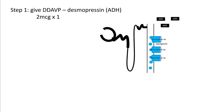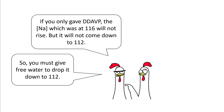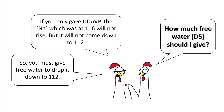DDAVP will increase the aquaporin channels and result in absorption of free water, which will raise urine osmolality and decrease urine production — some people call DDAVP a 'urinary clamp.' Giving DDAVP alone will not raise your sodium; it will keep the sodium at 116. So to bring it down to 112, you have to give free water. Let's see how much free water this patient needs.